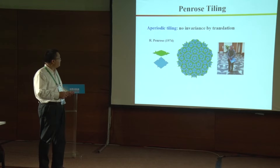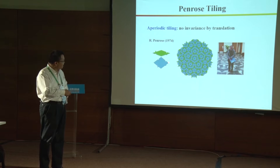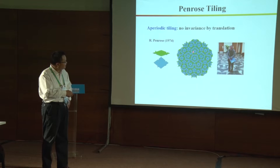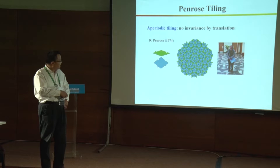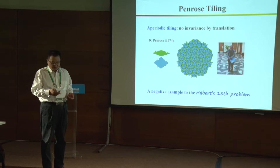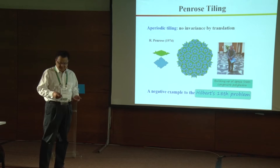Very famous is the Penrose tiling. This is an aperiodic tiling — no periodicity by translation. You see two diamonds: one with angle 36 degrees and the other with 18 degrees. You can observe a beautiful pattern. The Penrose tiling is actually a negative example to Hilbert's 18th problem, which asks about building up space from a concrete polyhedron.